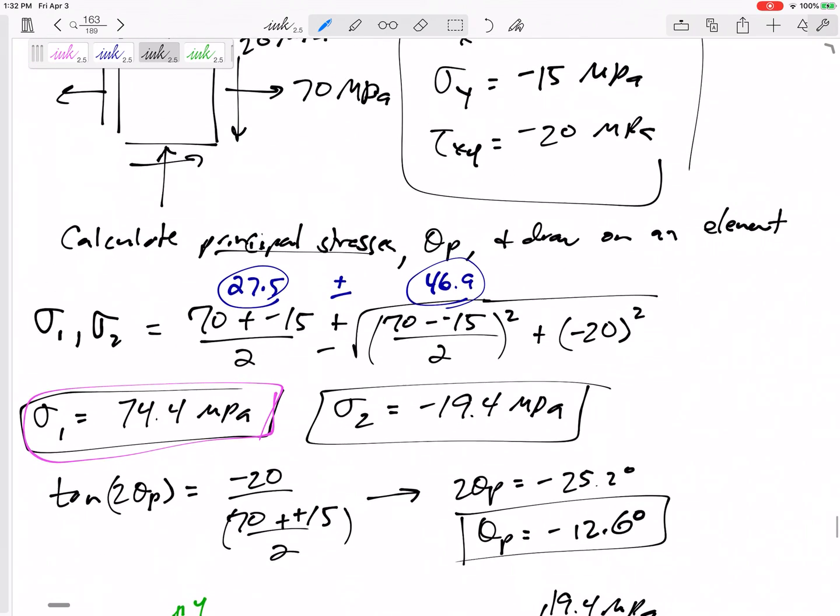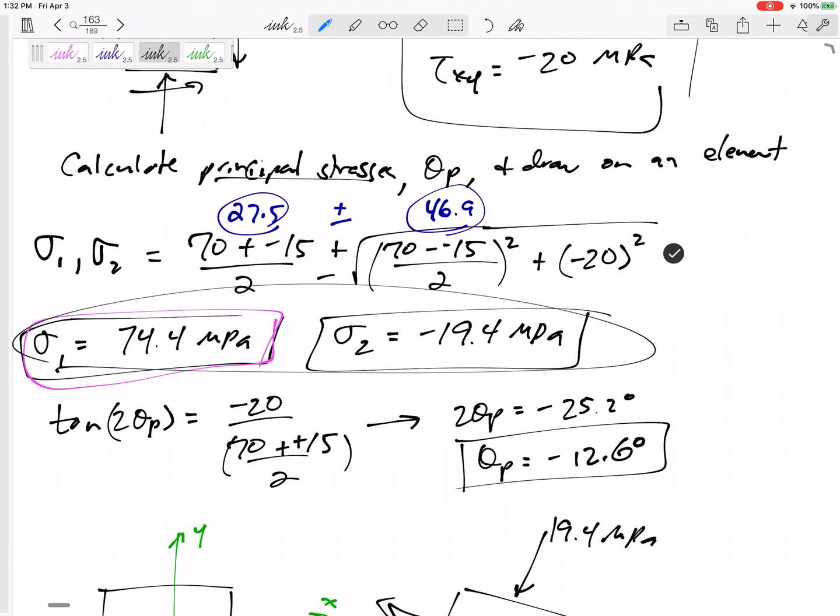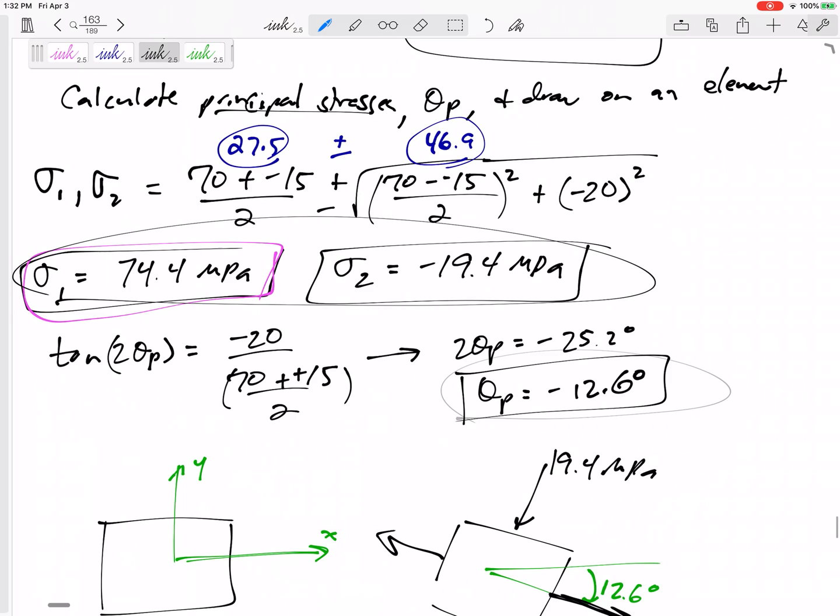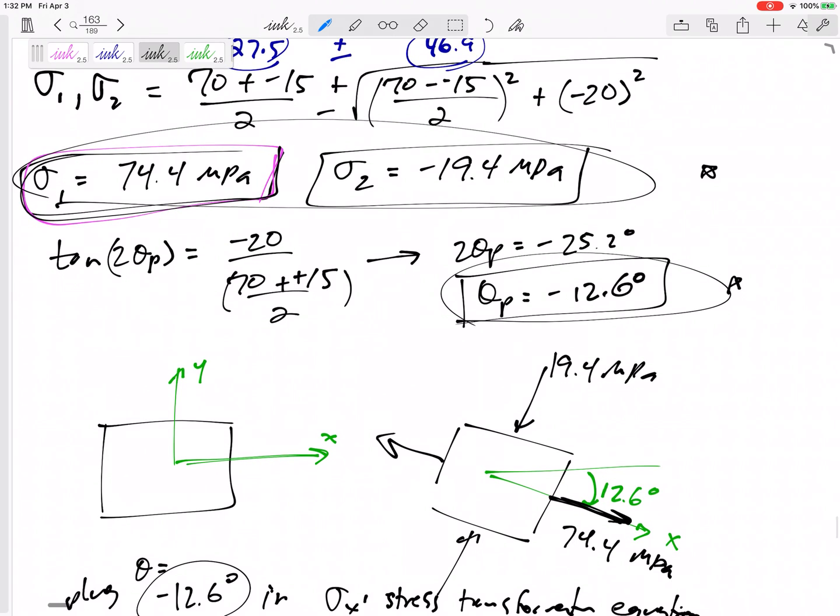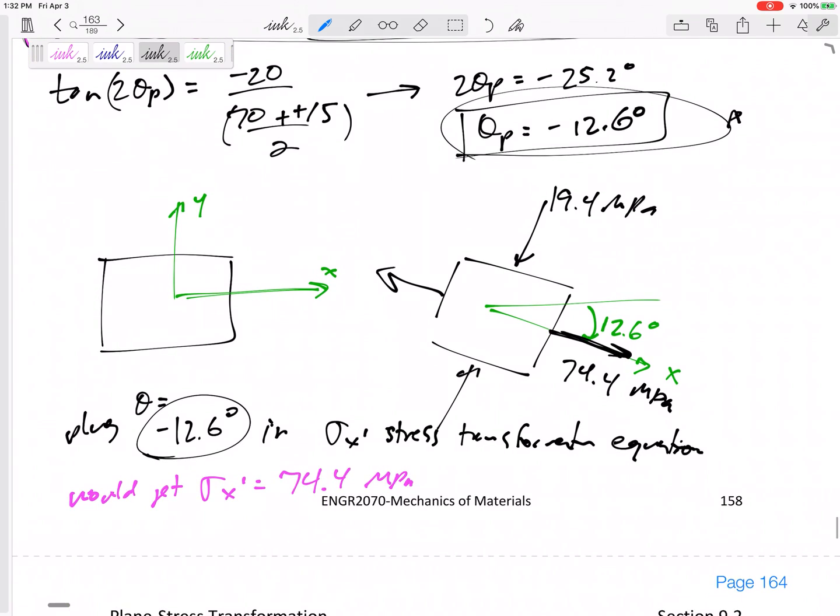So there we go. You know, that's how you can find the principal stresses, principal orientation. If I don't ask you to sketch it, you can just leave it right here. Say sigma 1 is 74.4, sigma 2 is negative 19.4, and theta p is negative 12.6 degrees. But if I ask you to sketch it, you need to know which of these goes on which face. So plug in your theta p to the original stress transformation equations.